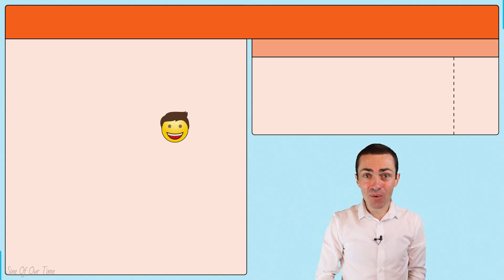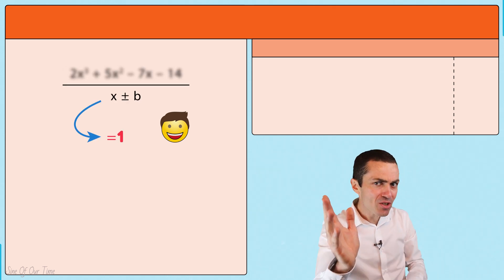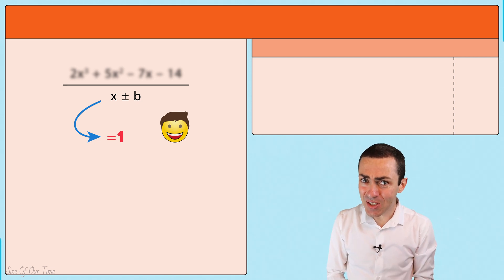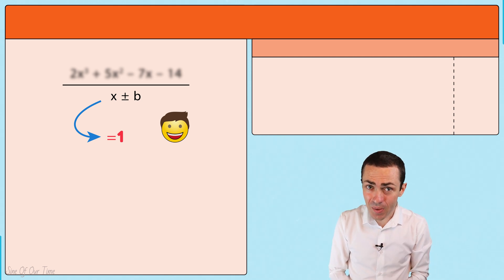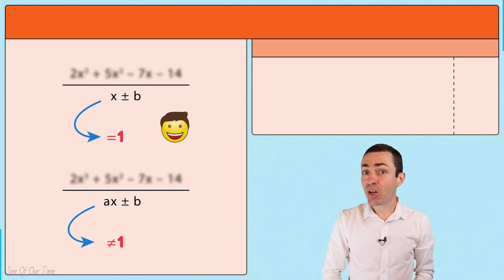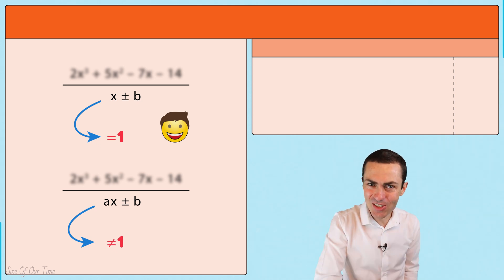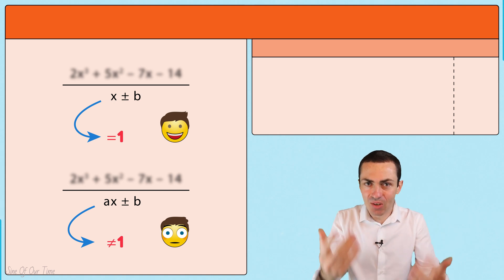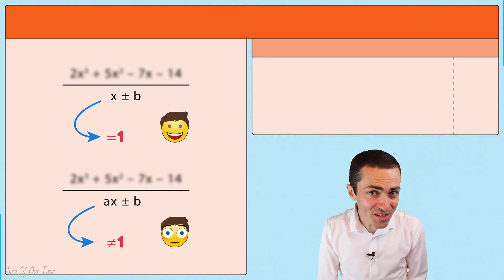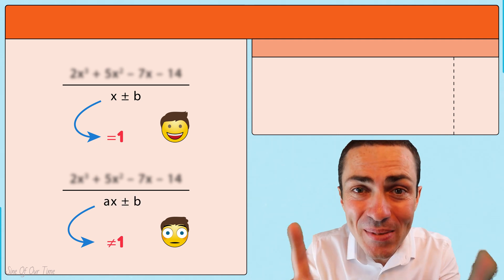When a divisor is of the form x plus or minus b, the question is: what happens when a divisor is not of this form but rather of the form ax plus or minus b, where the coefficient of x is not equal to one? This makes things a little challenging.